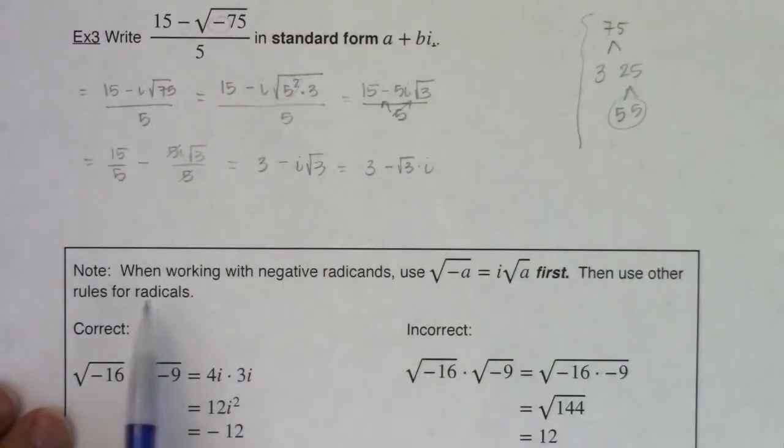Okay and I've mentioned this in our examples but it's always worth noting. So when working with negative radicands, do the i or I should say take out the i first. Alright you need to address the fact that you have an imaginary number first and then use the other rules for radicals.